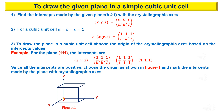For example, consider the plane (1 1 1). The intercepts made by this plane with the crystallographic axes are x, y, z equals 1, 1, 1. Since all the intercepts are positive, choose the origin as shown in figure 1.